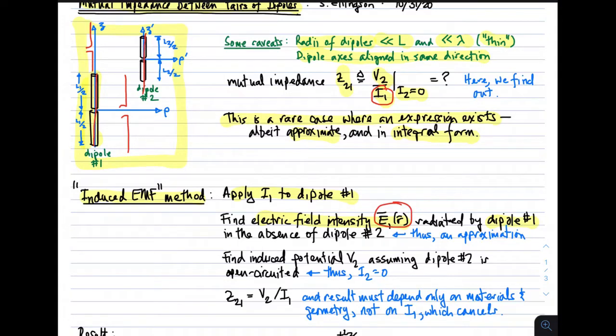Here's where the approximation comes in. When we compute this electric field, it's already quite complicated, especially since we need it in the near field and not merely in the far field. The electric field we compute presumes that dipole number 1 is by itself and dipole 2 doesn't exist. This is an approximation, although generally a very good approximation, even when the dipoles are quite close together. The third step, we find the induced potential V sub 2, assuming dipole number 2 is open-circuited, as required by the definition of mutual impedance.